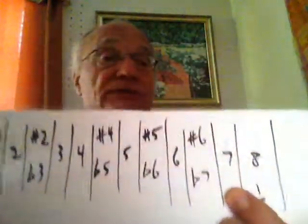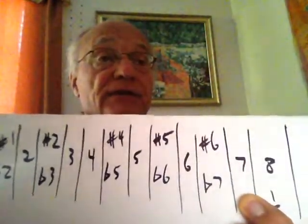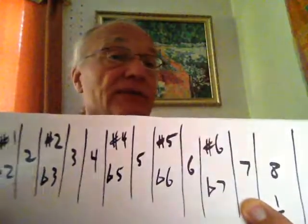The next note in that series becomes our seven in the scale, and this is how we end up with the chromatic scale. We just keep — it's getting harder and harder to hear those higher overtones — but we keep reducing them until we get to the major scale.